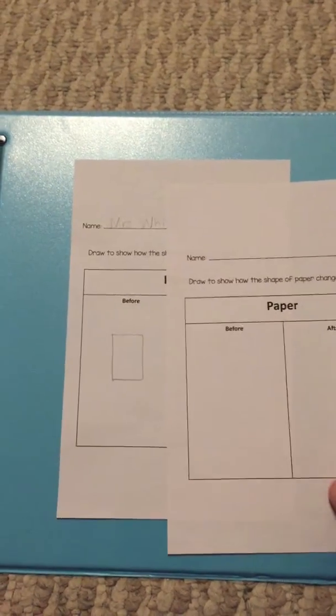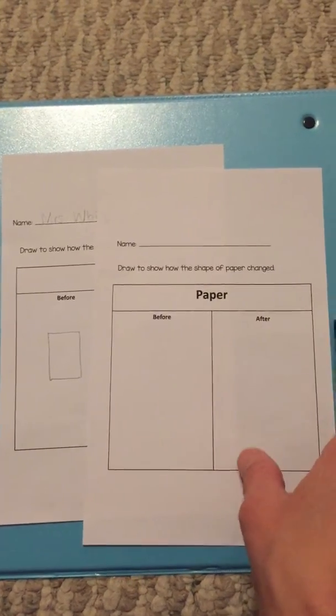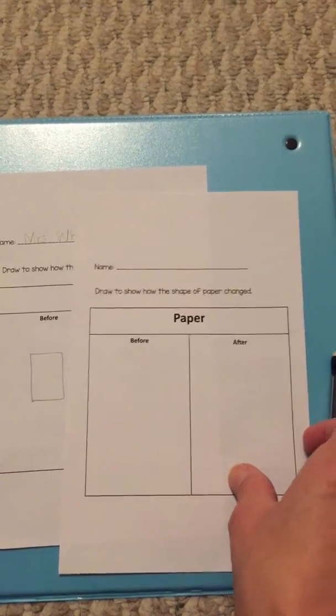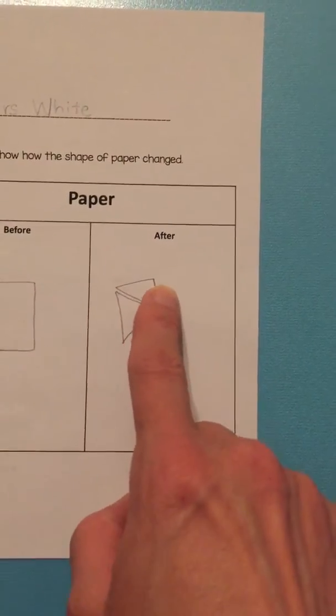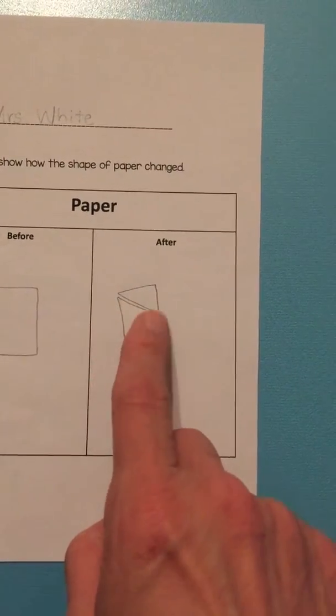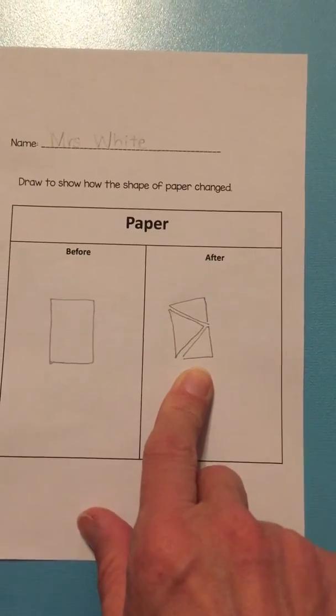Welcome back. Now that you've changed your paper, you want to go over to the other column and draw a picture of what your paper looks like now. I cut my paper and it ended up looking like three triangles. So I drew a picture of what my paper looked like.